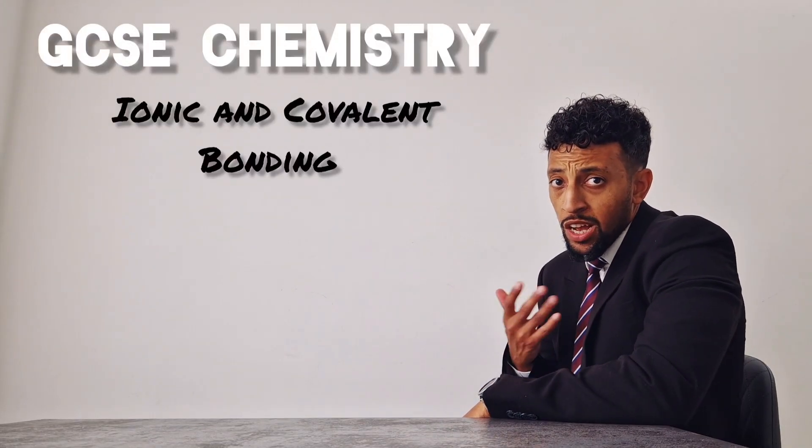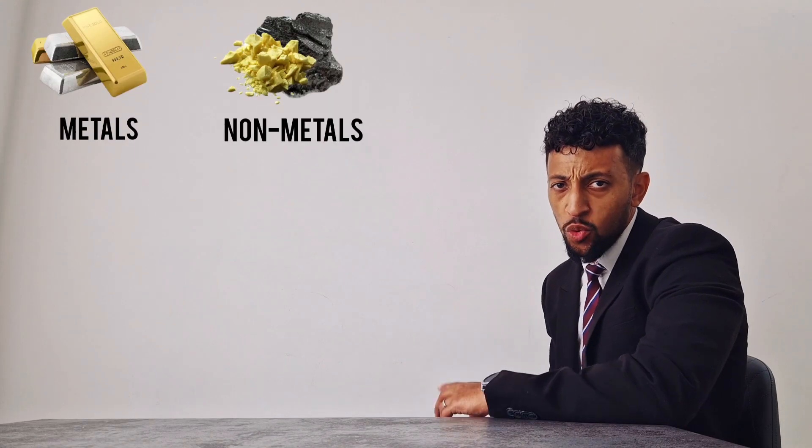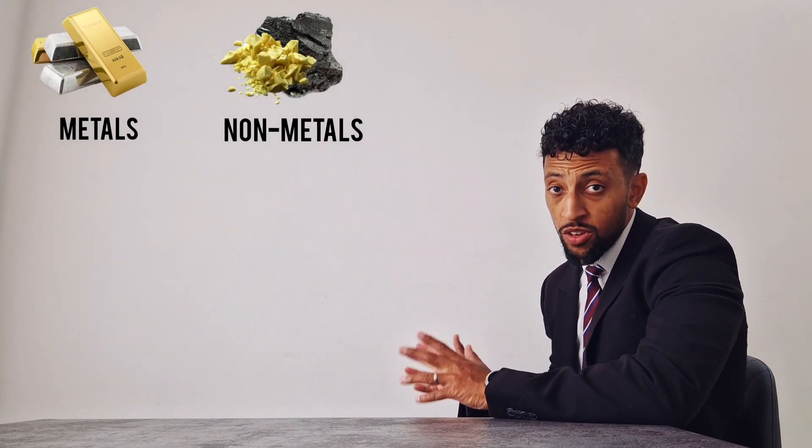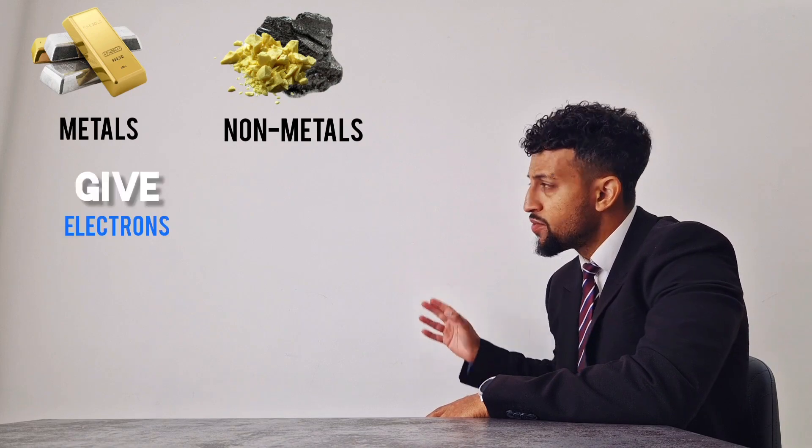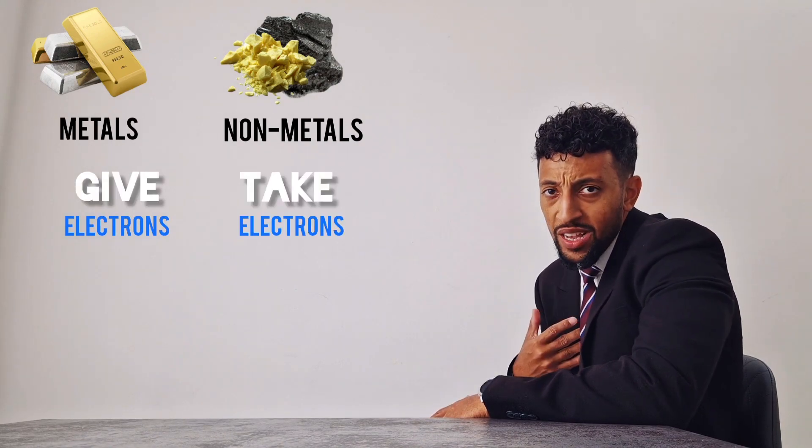I'm that teacher that raps if you're wondering. I'm here to talk to you about bonding. There's metals and non-metals. It's the outer shells that they're wanting. One type of bonding's ionic. Metals give, non-metals take.